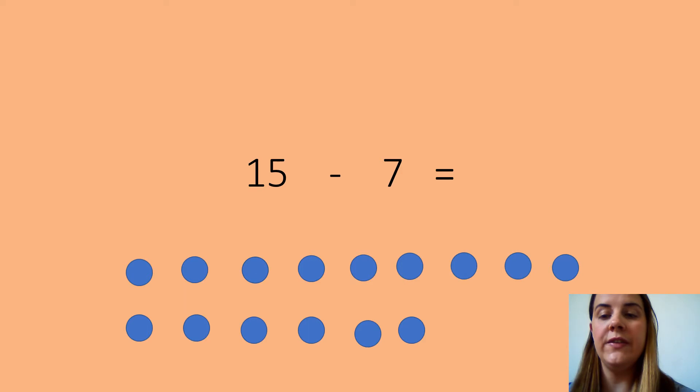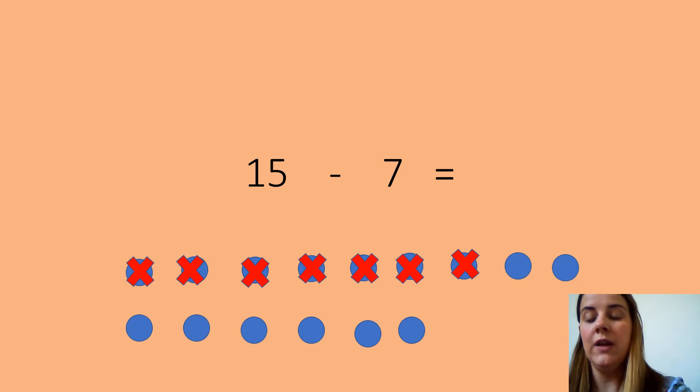Then we are going to cross out 7 because we are taking away 7 from 15. So 1, 2, 3, 4, 5, 6, 7. Then we're going to count how many we have left, the circles I haven't crossed out: 1, 2, 3, 4, 5, 6, 7, 8. So our answer is 8. Make sure you're writing your answer down as well.